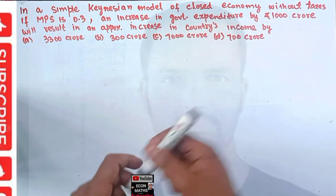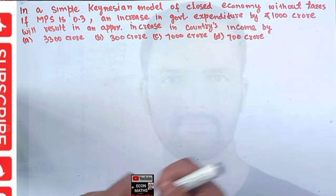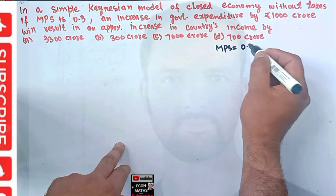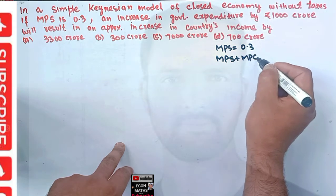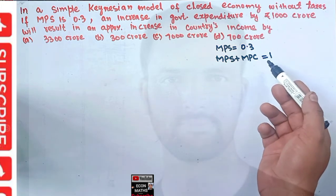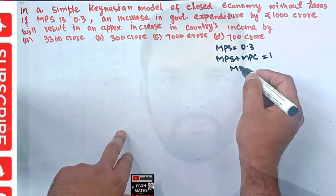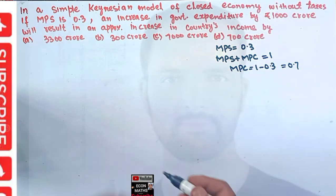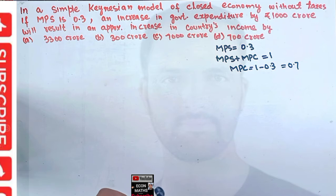We have to find the change in the country's income if expenditure is increased by 1000 crore. We are given MPS = 0.3. We know that MPS plus MPC equals 1 — that is, marginal propensity to save plus marginal propensity to consume both add up to 1. Since MPS is 0.3, MPC = 1 minus 0.3 = 0.7. So our marginal propensity to consume is 0.7.